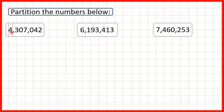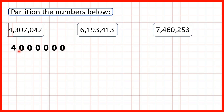This 4 is in our millions place value so it represents 4 million — that's 4 with 6 zeros on the end, because we have 6 place values after our millions place value. Looking at our number, we have 6 digits after the 4, so we write 6 zeros after the 4 when we partition it. Now we have a 3 in our hundred thousands, so that's 300,000. We have 5 digits after the 3, so when we partition the number we write 5 zeros after the 3.